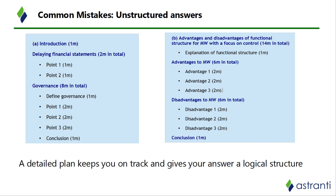Here's an example of what a plan might look like when sitting this exam. On the screen, the points shown in blue and bold represent the structure. The question is in two parts: Part A relates to delaying financial statements and corporate governance, and Part B is about the advantages and disadvantages of a functional structure for the company, with a focus on control.